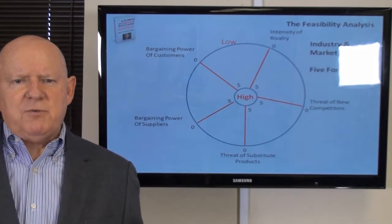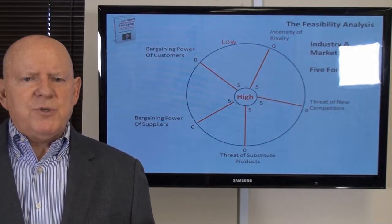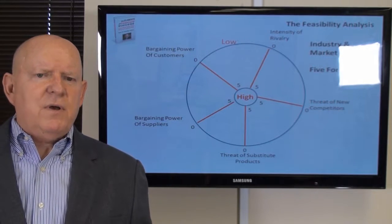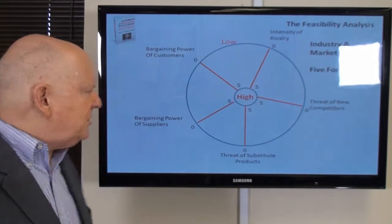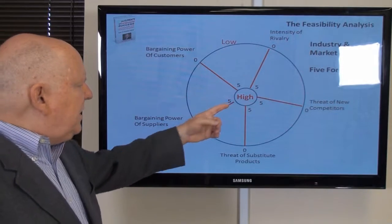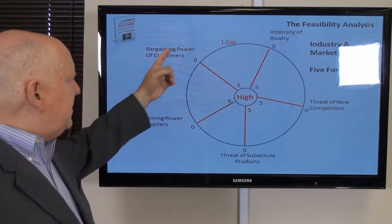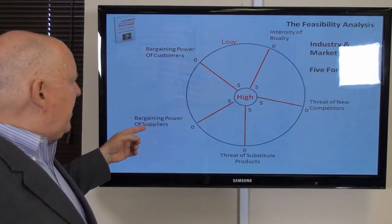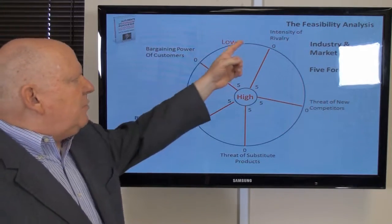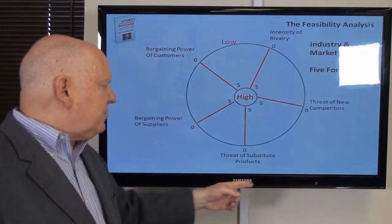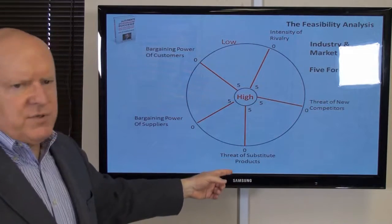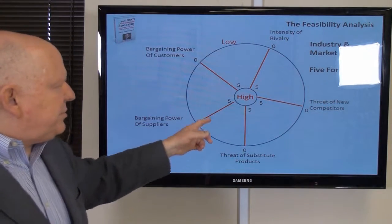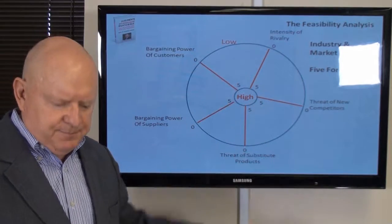The five forces matrix can be represented in what we call the circle diagram — the five forces circle. Essentially, you lay out on a spoke each one of the various factors: bargaining power of suppliers, customers, rivalry, threat of competitors, and threat of substitute products. On the outside of the circle is low competition; on the inside of the circle is high.